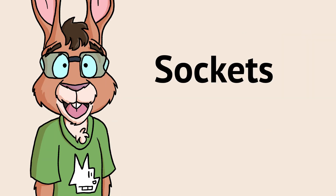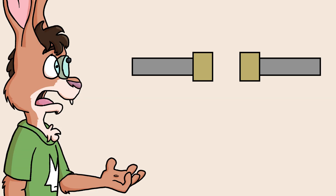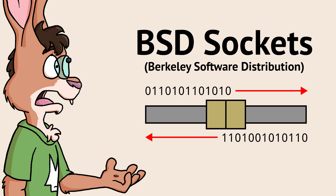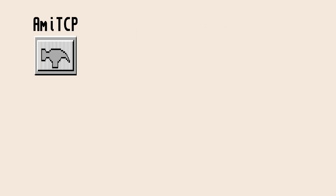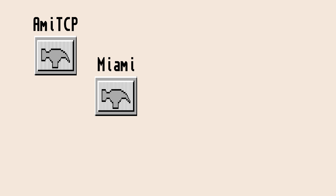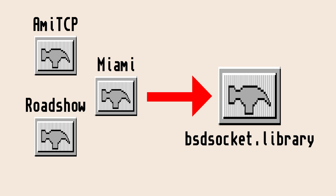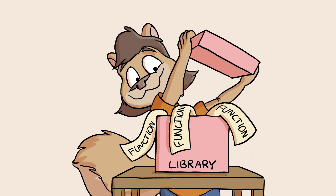Servers and clients use things called sockets to connect to each other. Sockets are the building blocks of modern network code, and BSD sockets are the type of sockets we get on the Amiga. When you start up tools like AMI-TCP, Miami, or Roadshow, they provide a BSD socket library called bsdsocket.library that we can use to communicate.